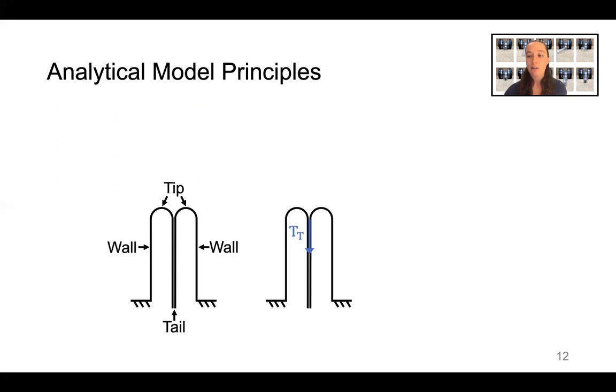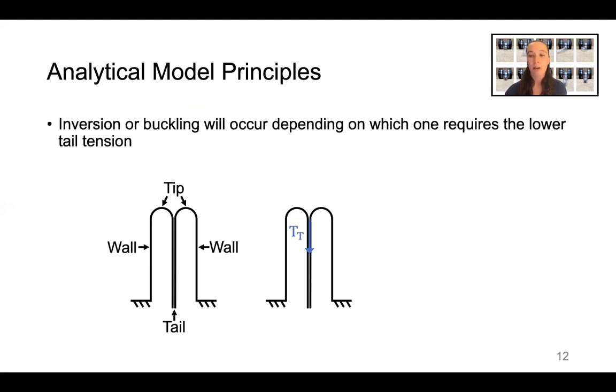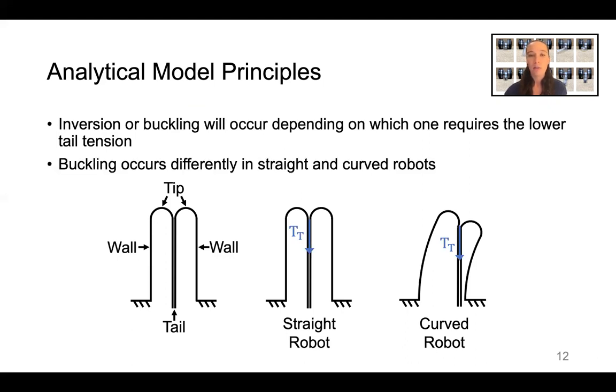Our model assumes that either inversion or buckling will occur, depending on which one requires the lower tail tension. Now for a straight robot, the force applied on the tail is completely axial, and it tends to cause the robot to buckle in the middle. But for a curved robot, the force applied on the tail exerts a moment about the base, and it tends to cause the robot to buckle at the base. So we model straight and curved robots differently.